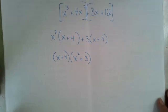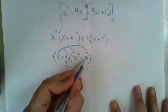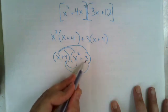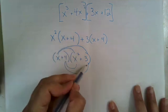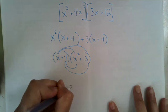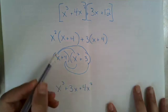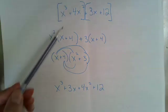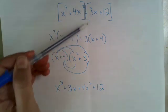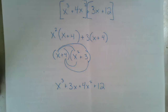If I want to check to see if I'm right, I could go ahead and FOIL — remember our old friend FOIL: Firsts, Outsides, Insides, Lasts. Firsts: x times x squared is x cubed. Outside: x times 3 is plus 3x. Inside: 4 times x squared is plus 4x squared. And last: 4 times 3 is plus 12. And there's where I started from — x cubed, 3x, 4x squared, and 12. The order doesn't matter because in addition we can reorder those things and everything stays the same.